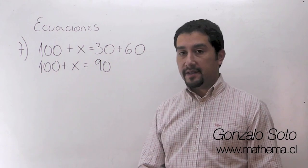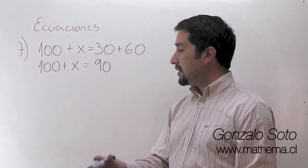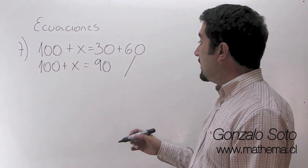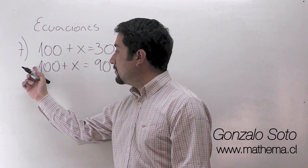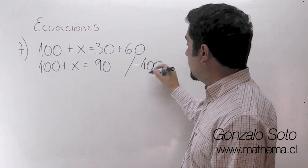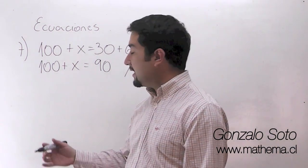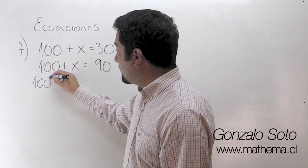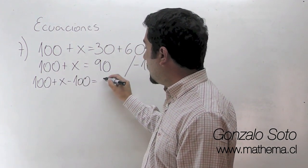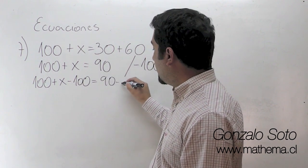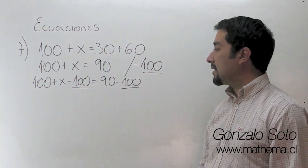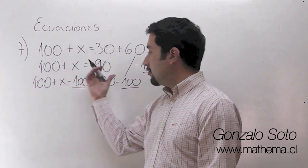Como la idea siempre es dejar la x aislada, solita a un lado, nosotros ponemos nuestra rayita y vamos a agregar el inverso aditivo, el inverso de signo, que es menos 100, para que se nos puedan restar y que la x quede solita. Entonces tenemos 100 más x menos 100 igual a 90 menos 100. Recuerden que ese 100 es para los dos lados.